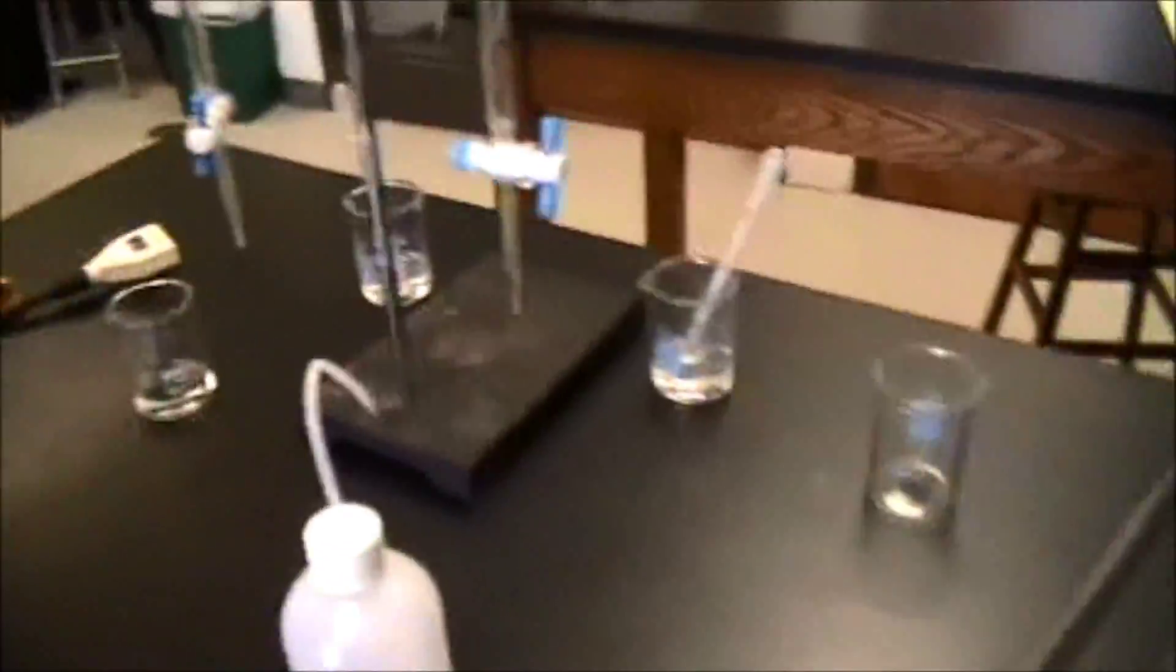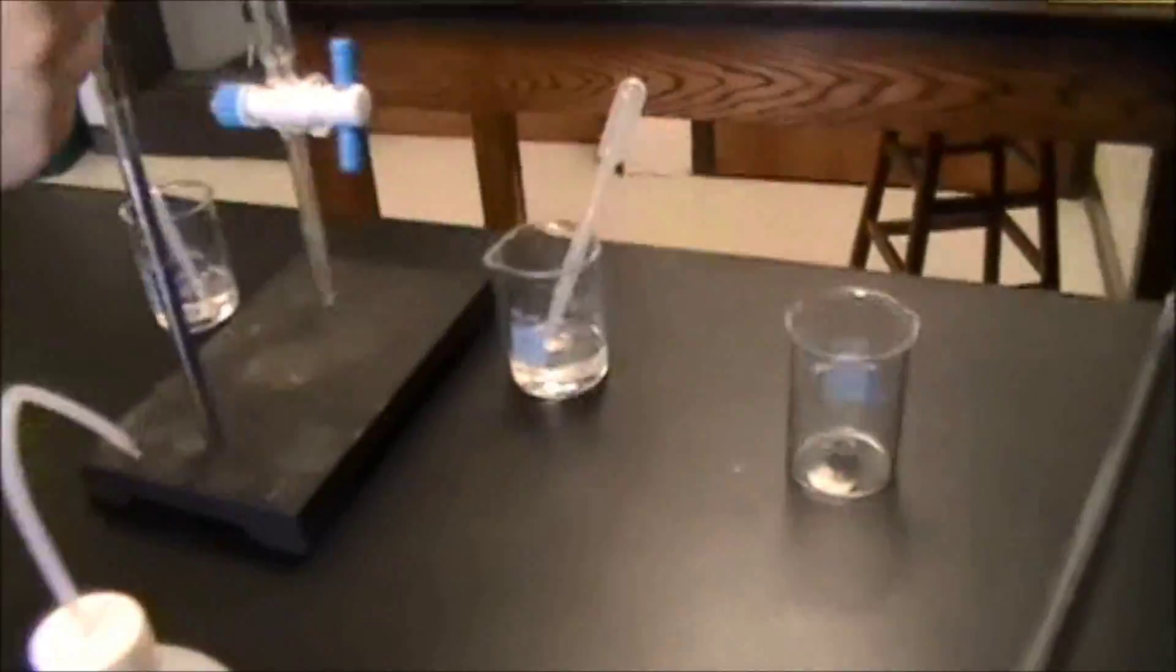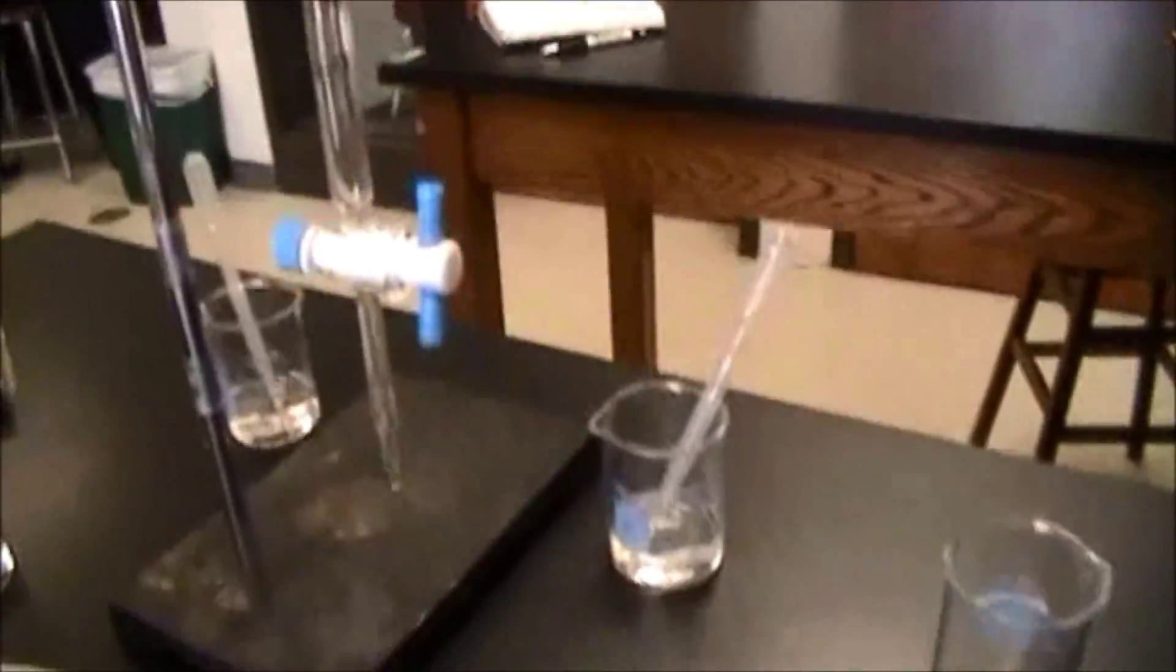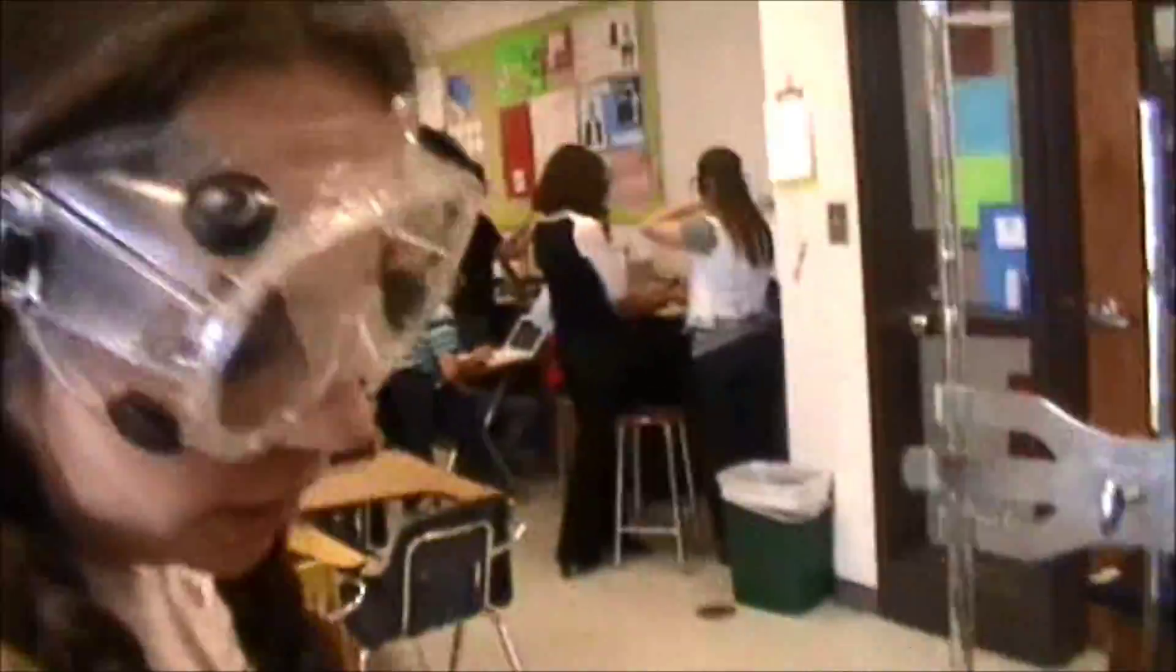What we're going to do is we're going to have our solution of our buffer solution, which is right there. Down here is our analyte. And then in here we're going to have HCl as our titrant. And we're going to add HCl to the analyte and hope that we will get our optimum buffering capacity.